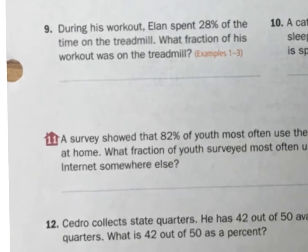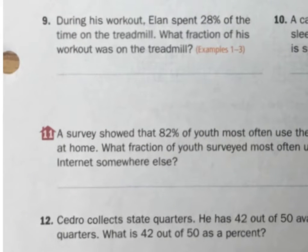Let's do some word problems. Everybody's fun stuff. During his workout, Elon spent 28% of the time on the treadmill. What fraction of his workout was on the treadmill? Well, if it was 28%, it was 28 over 100. Now I just have to simplify it. Let's cut it in half. 28 in half is 14, and that's 50. They're both still even. I'm going to cut it in half one more time. That's 7/25. And there's my answer.